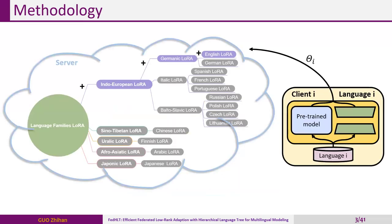This figure shows the overall framework of FEDHLT, an efficient framework for federated multilingual modeling. It contains two key designs: federated low-rank fine-tuning and the Hierarchical Language Tree Learning Approach.